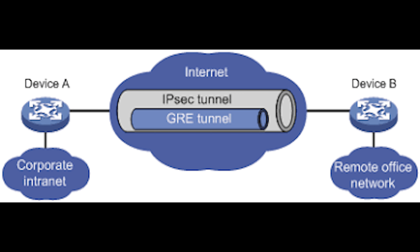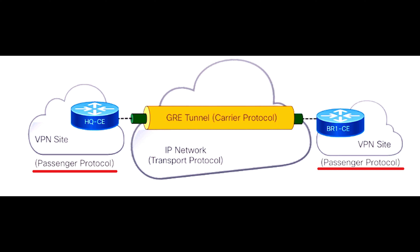GRE is a protocol that encapsulates packets in order to route other protocols over IP networks. It is a simple IP packet encapsulation protocol used when IP packets need to be sent from one network to another without being parsed or treated like IP packets by any intervening routers. GRE tunneling is accomplished through tunnel endpoints that encapsulate and decapsulate traffic. IPv4 broadcast and multicast traffic can be encapsulated using GRE, and it is also IPv6 supported. It is a straightforward and adaptable protocol — numerous protocols can be encapsulated in a single GRE tunnel, and it can connect multiple discontinuous sub-networks.